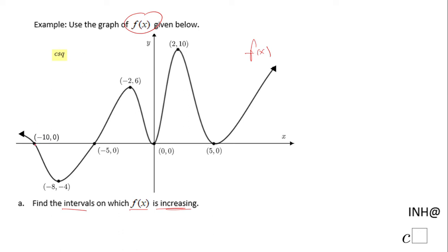We see a function that comes from the left side and goes to the right side. Since I'm not so sure what happens on the far left and right, I'm going to look only at the interval from negative 10 to 5. So this is the interval I'm going to examine for the questions we have here.